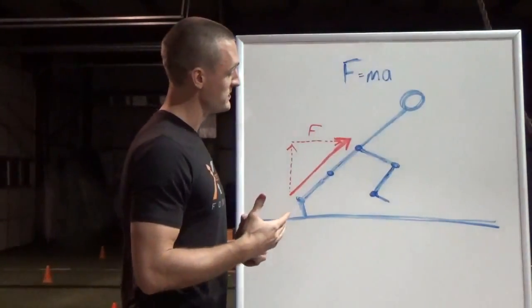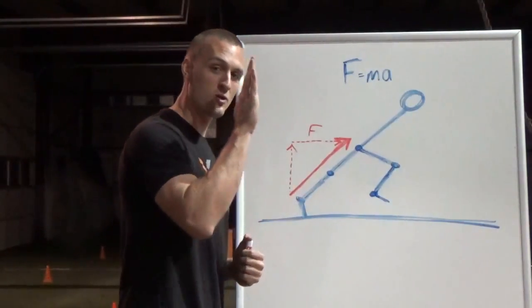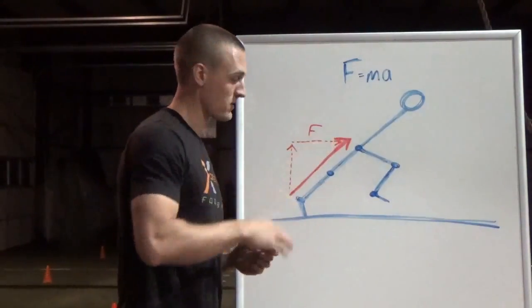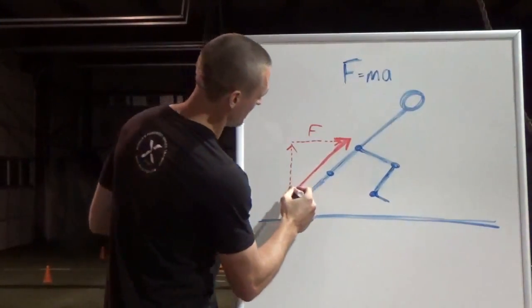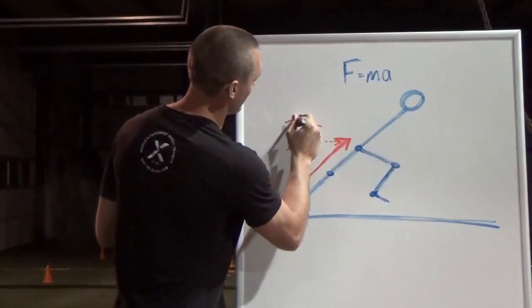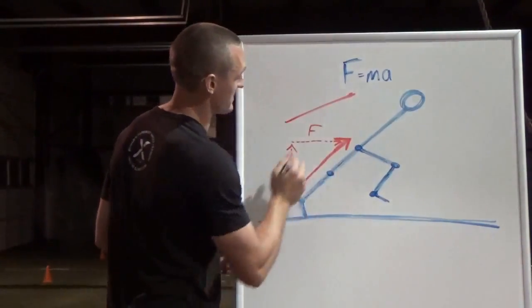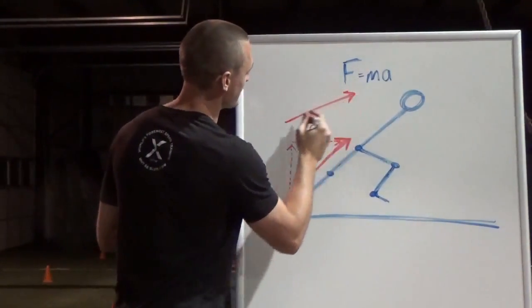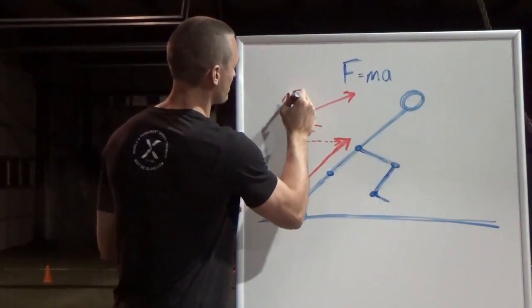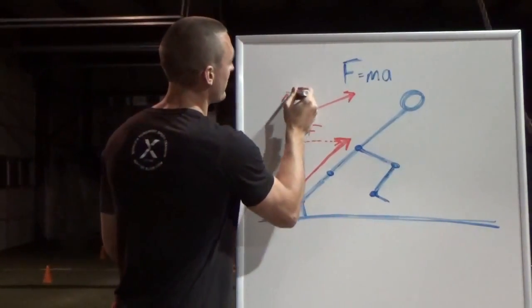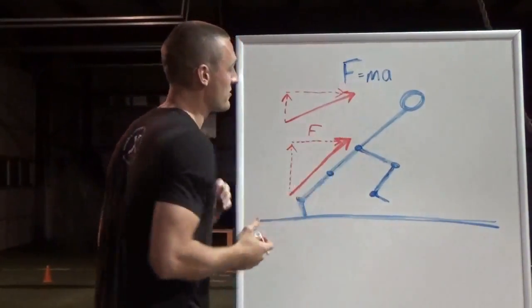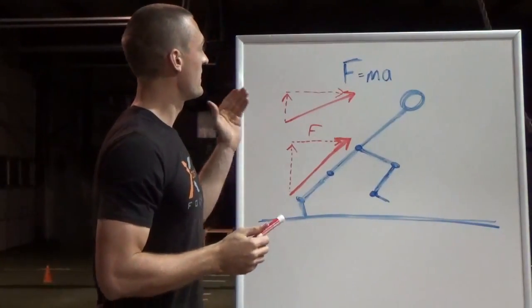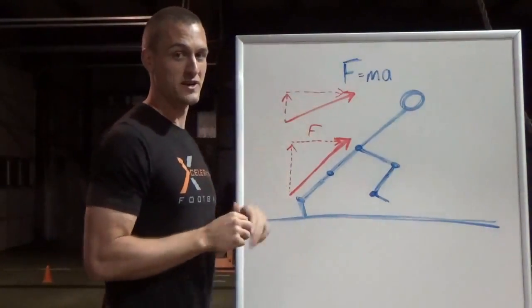The other thing we can do is we can lower the angle. So if this was my angle and I get my acceleration angle down to that, that's going to give me a smaller vertical component and a larger horizontal component. And that would give me a greater horizontal acceleration.